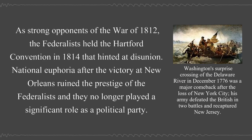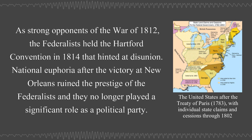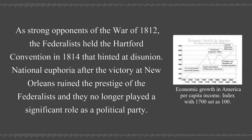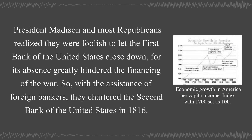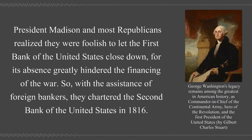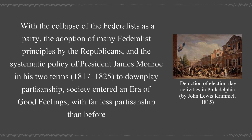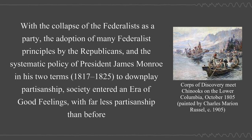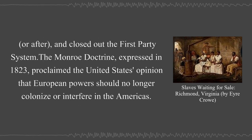As strong opponents of the War of 1812, the Federalists held the Hartford Convention in 1814 that hinted at disunion, but national euphoria after the victory at New Orleans ruined the prestige of the Federalists, and they no longer played a significant role as a political party. President Madison and most Republicans realized they were foolish to let the First Bank of the United States close down, for its absence greatly hindered the financing of the war. So with the assistance of foreign bankers, they chartered the Second Bank of the United States in 1816. The Republicans also imposed tariffs designed to protect the infant industries that had been created when Britain was blockading the U.S. With the collapse of the Federalists and the adoption of many Federalist principles by the Republicans, society entered an Era of Good Feelings under President James Monroe (1817–1825), with far less partisanship, closing out the First Party system.